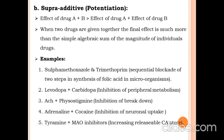The second type of synergistic effect is the supra-additive or potentiation effect. Here, the effect of drug A plus drug B is greater than the effect of drug A plus the effect of drug B individually. For example, if drug A gives an effect of 20 and drug B gives 20, the combined total may be 60, 80, or even more — greater than the simple algebraic sum of 40. When two drugs are given together, the final effect is much more than the simple algebraic sum of the magnitude of individual drugs.